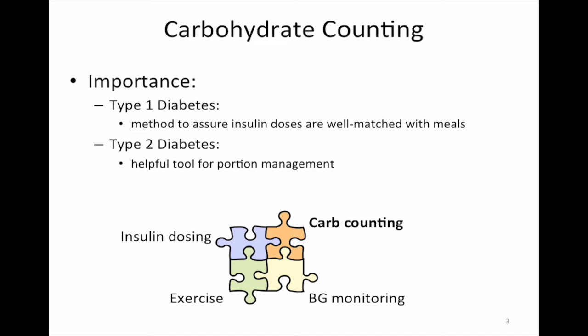Carbohydrate counting is one piece of the puzzle in the complexity of managing diabetes. Not only does the person with diabetes need to manage their insulin dose, they need to consider what their current blood sugar is, they need to look at whether exercise is planned or not, and then they have to look at the carbohydrate content of the meal. Carbohydrate counting is a method to assure type 1 diabetes insulin doses are matched to the food, but it can also be implemented in type 2 diabetes. Many people with type 2 diabetes use carbohydrate counting to manage portion size.